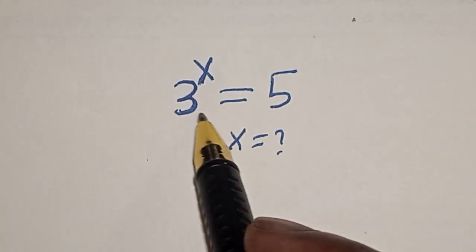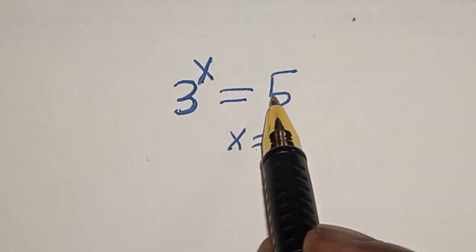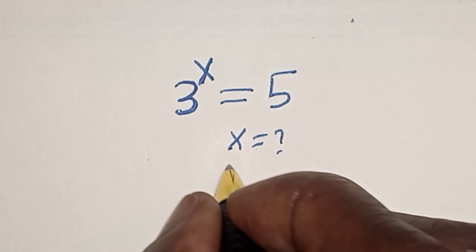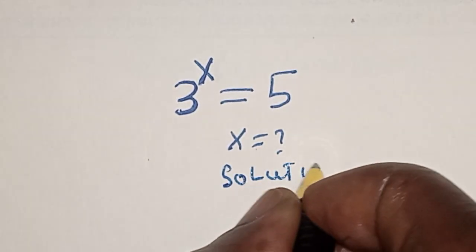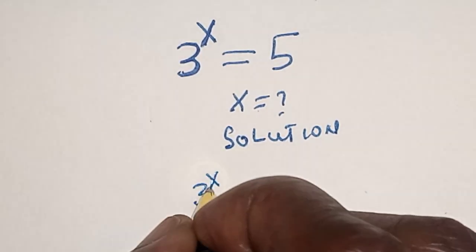Hello, welcome to Magdisk. In this class we want to find the value of s from this equation: 3 raised to power s is equal to 5. Please like, share, comment and subscribe. Solution: 3 raised to power s is equal to 5.